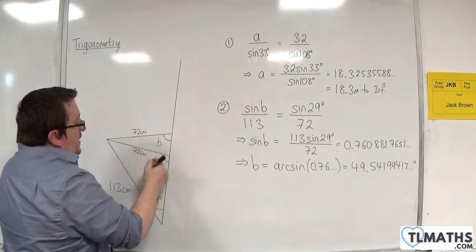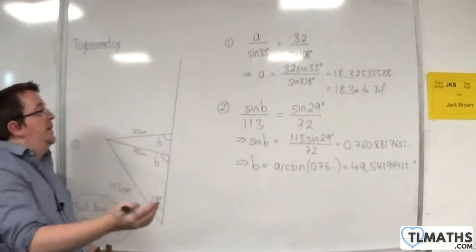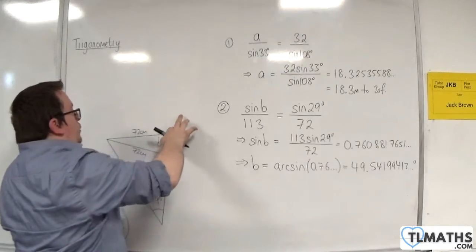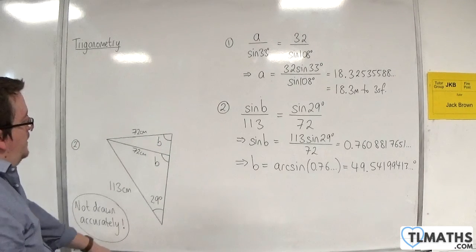Is it this B, which is clearly an obtuse angle, or is it this B, which is an acute angle? We've just worked out the acute angle.